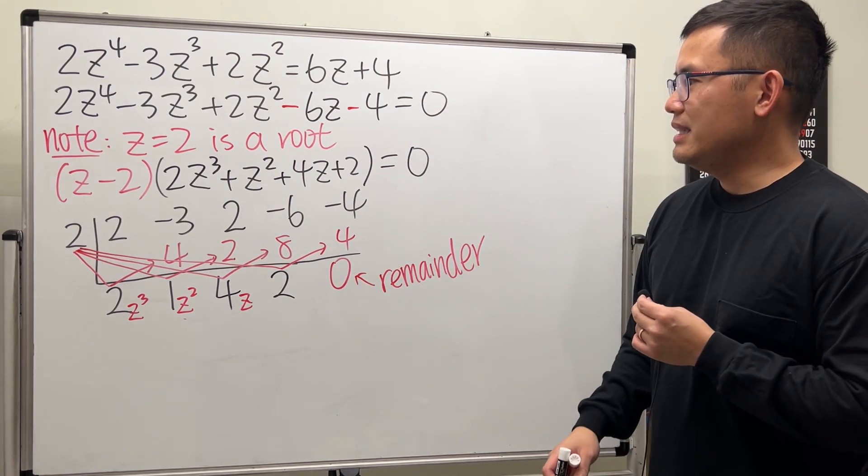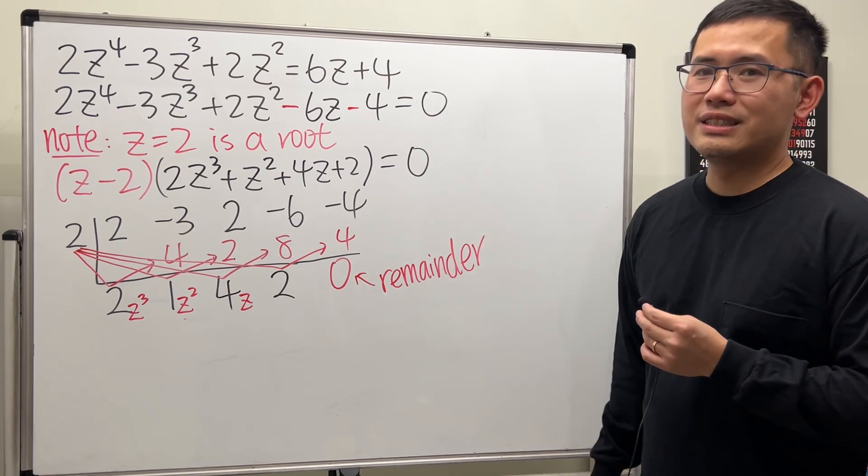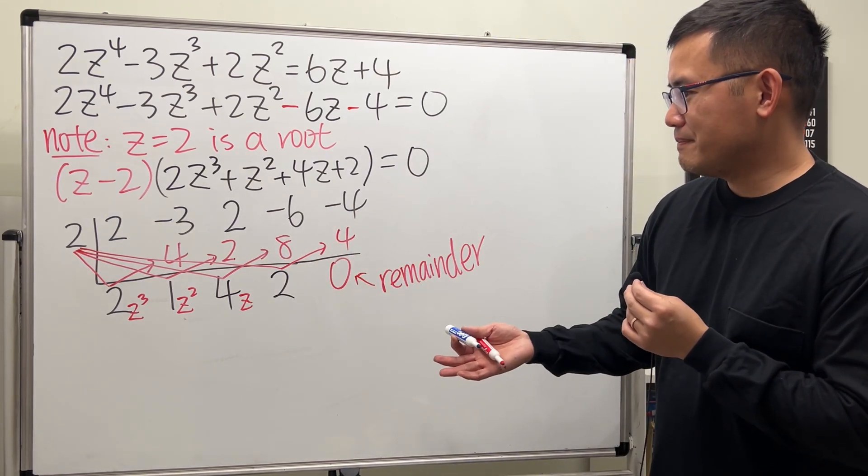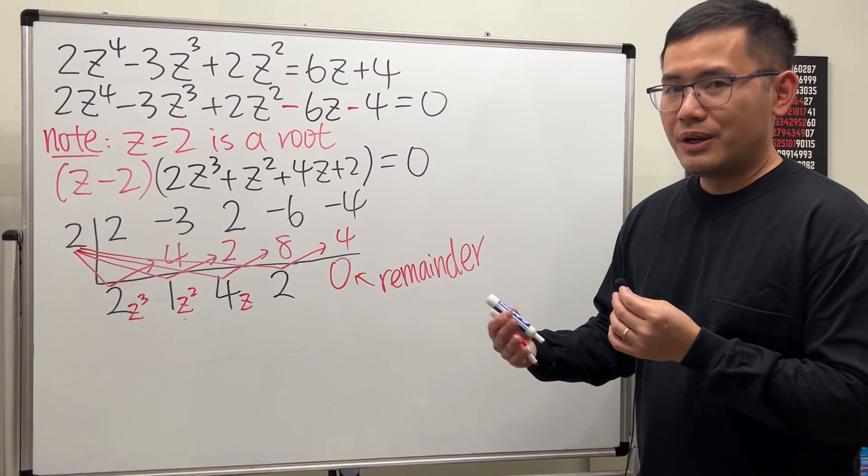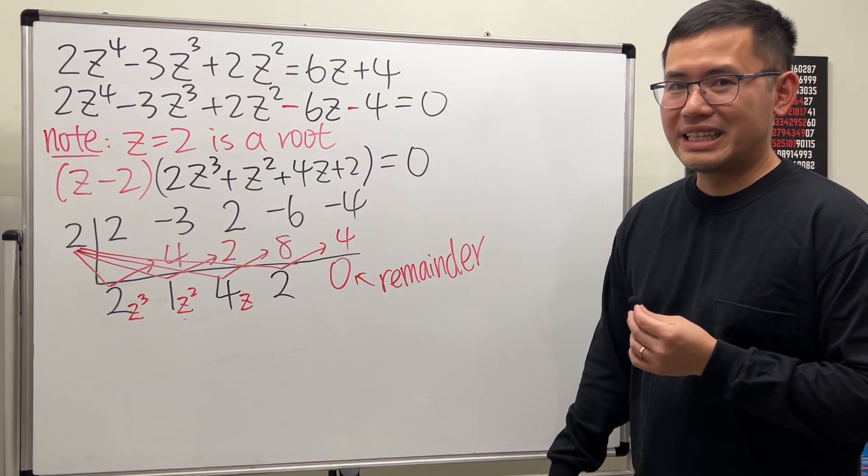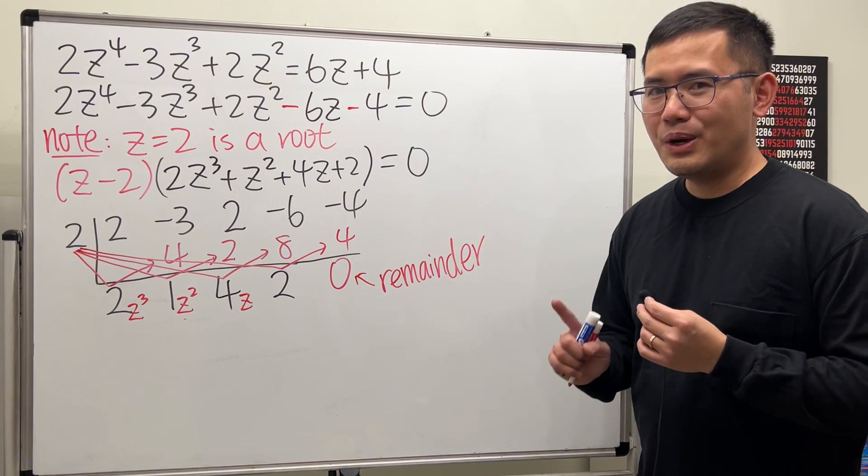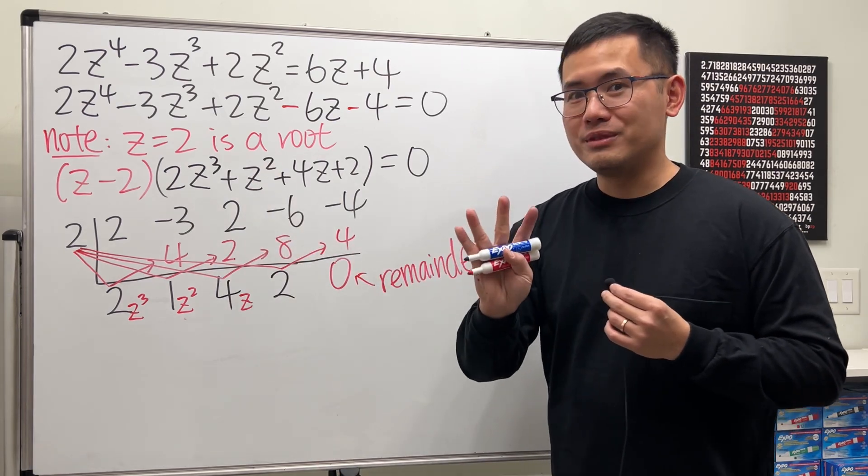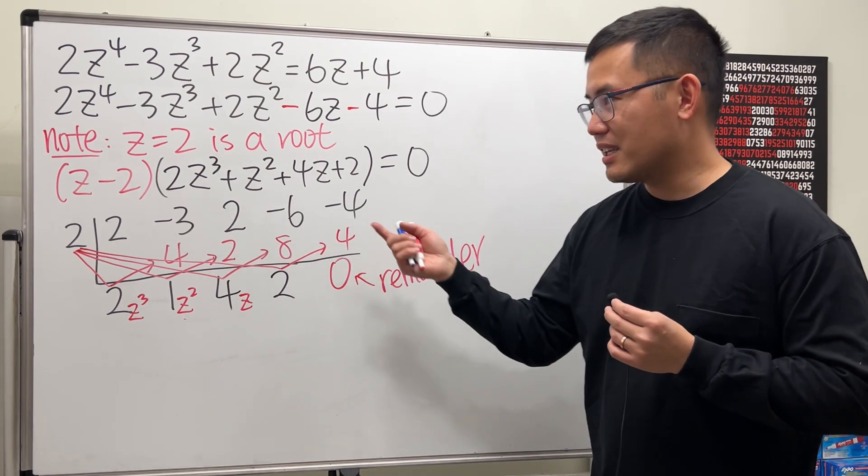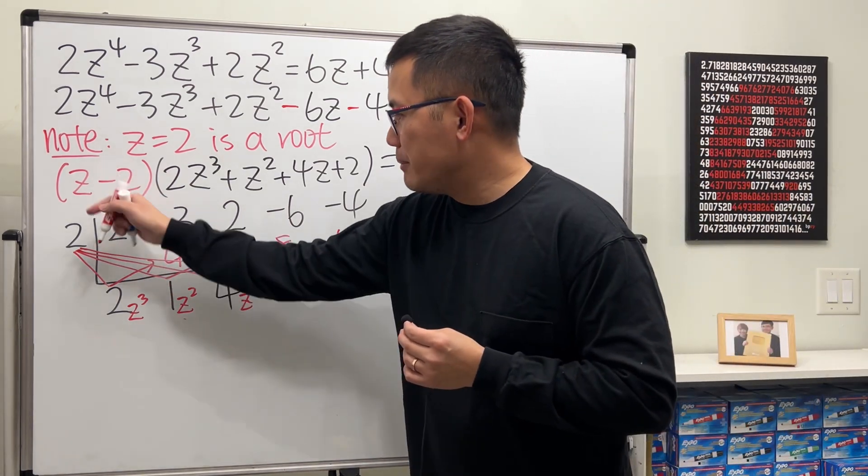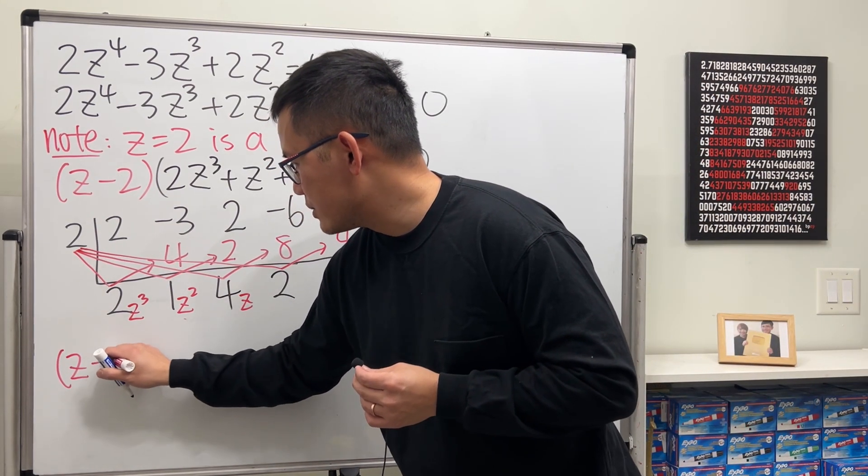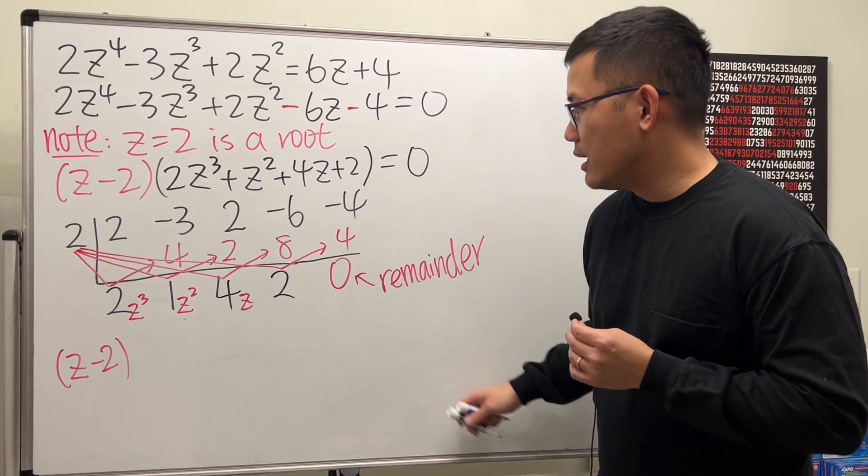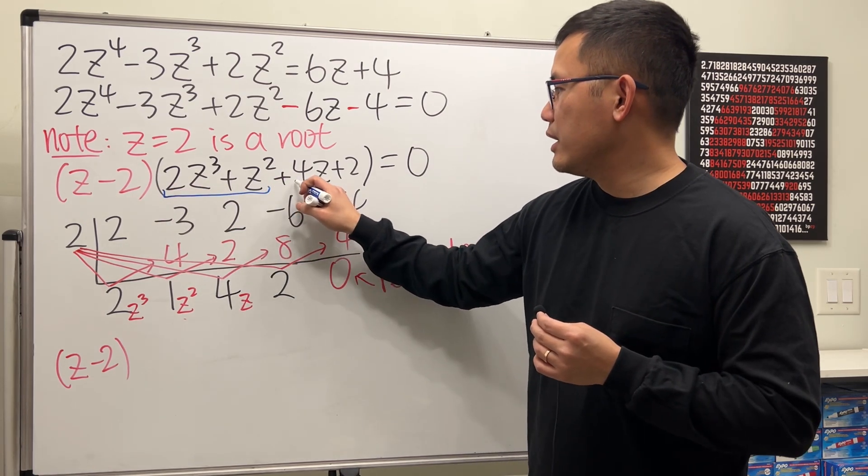And then, now you might be wondering, are we going to do the rational zero theorem again? No. You don't have to. Because in fact, this is factorable by grouping. We have 4 terms. Try to see if we can do it by grouping. And in this case, yes we could. So check this out. I'm going to write down the z minus 2 all the way in the front. And what I'm going to do is I'm going to group these first two terms, and then group the next two terms.